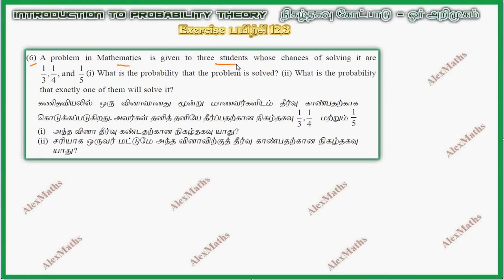A problem in mathematics is given to 3 students whose chances of solving it are obtained by the students. 3 students are A, B, C. So P of A is 1 by 3, P of B is 1 by 4, P of C is 1 by 5.